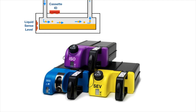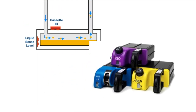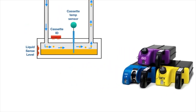Regarding cassette IDs: there are signature magnets that allow the anesthesia machine to identify the agent cassette that is inserted into the machine slot. Temperature in the vaporizing chamber or sump is sensed, and the input is given to the CPU to regulate vapor output.